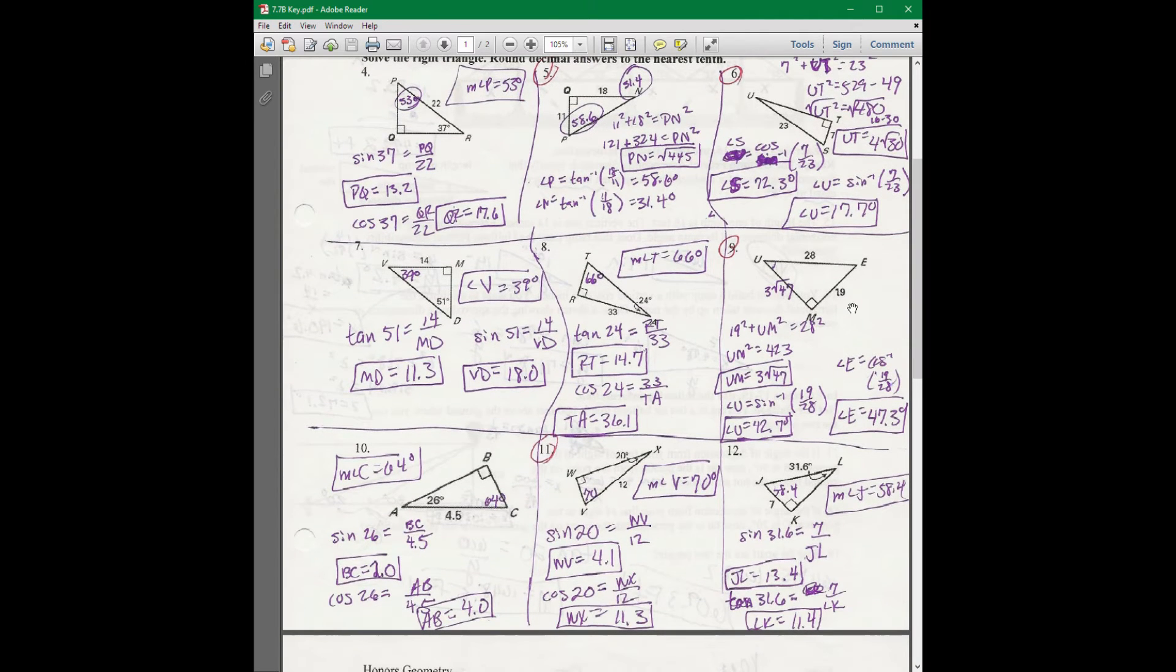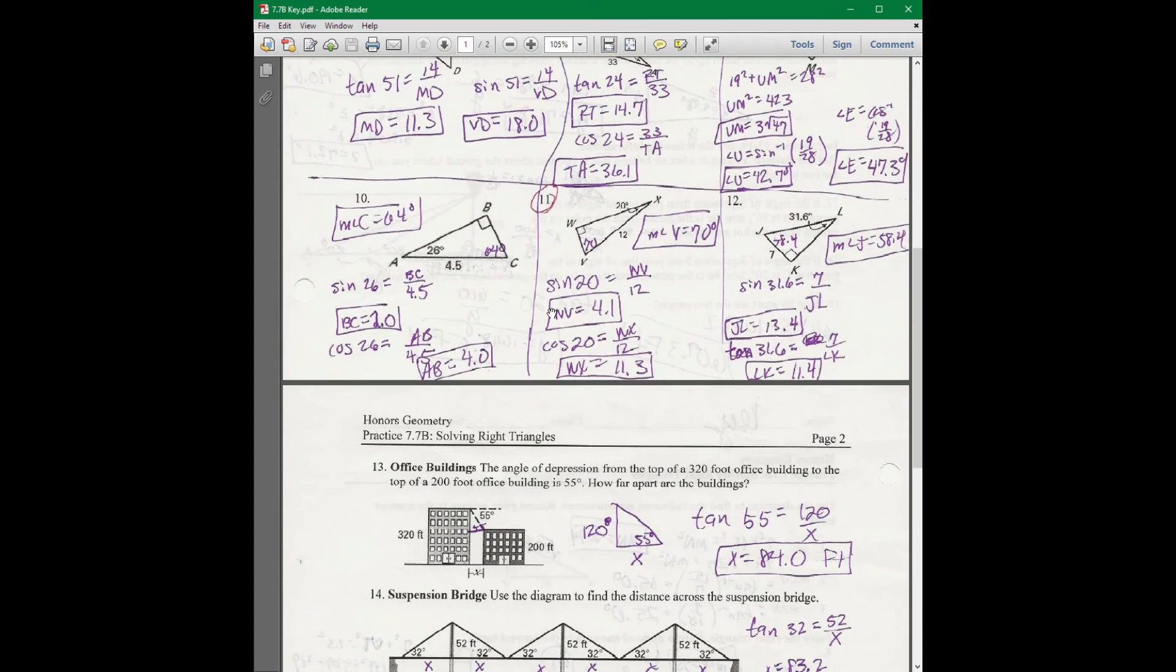For number 9, use the Pythagorean theorem. You get 3 times the square root of 47. That's a really fun answer, isn't it? And then for angle E, I said I had to do cosine of 19 over 28 gives you 47.3. And for angle U, use the sine of 19 over 28 gives you 42.7.